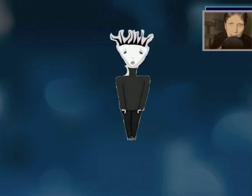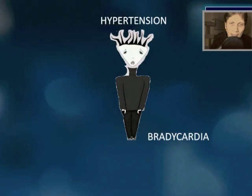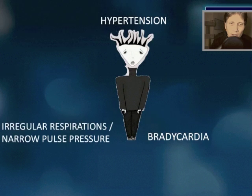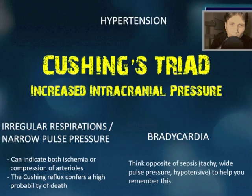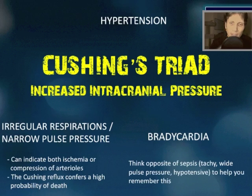Name the triad and associated condition: hypertension, bradycardia, and irregular respirations — and/or a narrow pulse pressure. So there are actually four things here: hypertension, bradycardia, and then irregular respirations or sometimes narrow pulse pressure. This is the Cushing triad, representing increased intracranial pressure. To remember this, think the opposite of sepsis: in sepsis you're tachycardic with a wide pulse pressure and hypotensive, whereas with the Cushing triad you have hypertension, bradycardia, and a narrow pulse pressure, and can get irregular respirations — fast or slow.